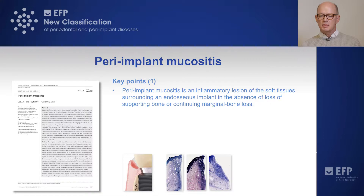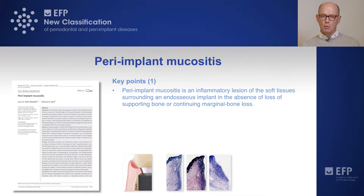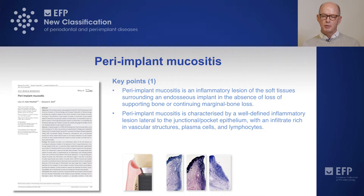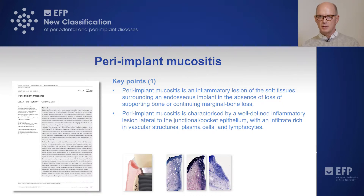Peri-implant mucositis is an inflammatory lesion in the soft tissue surrounding an implant, and there should be no loss of supporting bone or continuing marginal bone loss. In addition, peri-implant mucositis is characterized by a well-defined inflammatory lesion lateral to a junctional or pocket epithelium, with an infiltrate which is rich in vascular structures, plasma cells and lymphocytes.